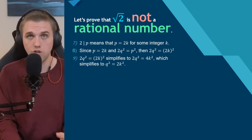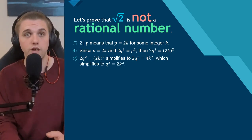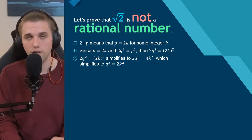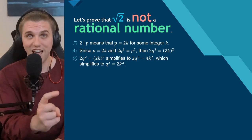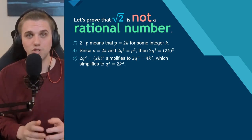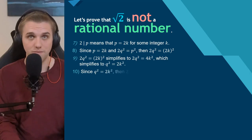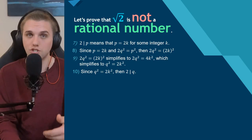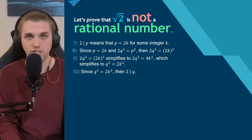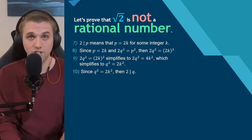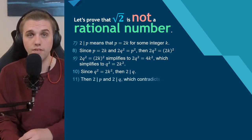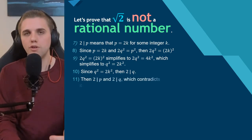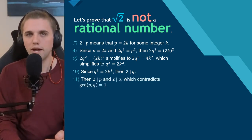This simplifies to 2q² = 4k², and dividing both sides by 2 gives q² = 2k². Notice this says q² equals 2 times some integer. Since 2 divides q², that means 2 divides q — again an exercise to work out. So both p and q are divisible by 2.